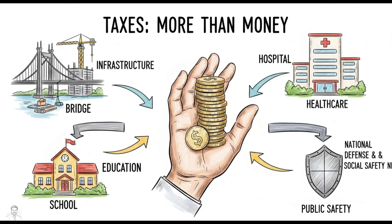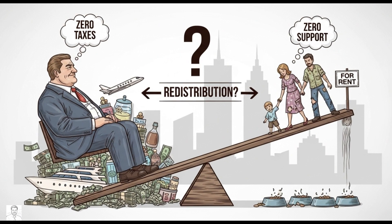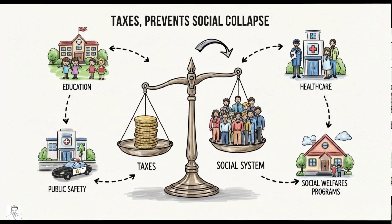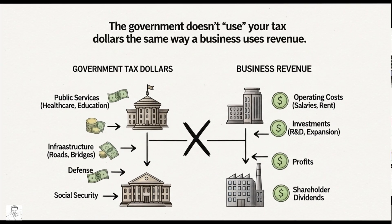Truth number three: taxes redistribute wealth and shape behavior. Taxes are not only about collecting money — they're a tool to shape society. High taxes on cigarettes? The government wants less smoking. Tax credits for solar panels? They want more clean energy. Lower taxes for small businesses? They want more entrepreneurship. And without taxes, the wealth gap becomes insane — imagine billionaires paying nothing while low-income families get zero support.